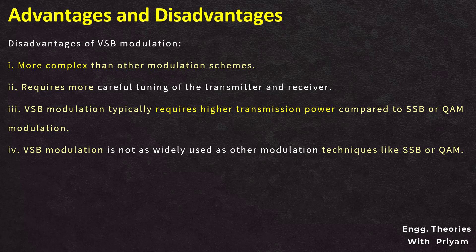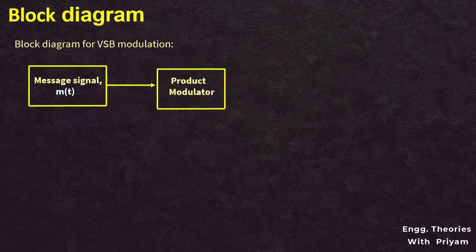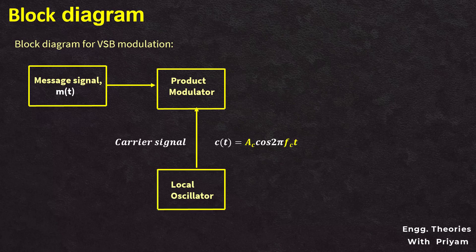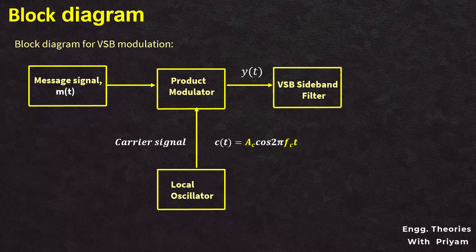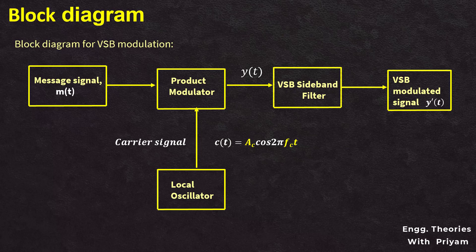Let's see the block diagram for the generation of a VSB modulated signal. The modulating signal m(t) and the carrier signal c(t) generated by a local oscillator are applied as inputs to a product modulator. The product modulator multiplies these signals and produces a DSB-SC modulated signal y(t). This DSB-SC signal is then passed through a VSB sideband filter, which passes one sideband along with the vestige of the other sideband.